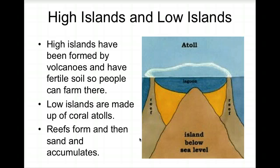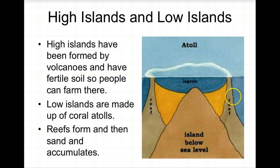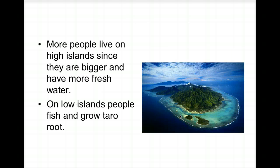High islands are formed by volcanoes and have fertile soil suitable for farming. Low islands are formed by coral atolls: a volcano collapses, its magma chamber subsides beneath the ocean, and coral builds up over time until it rises above the ocean surface. Sand then accumulates and reefs form. Most people live on high islands since they're bigger and have more fresh water. On low islands, people fish and grow taro root to survive.